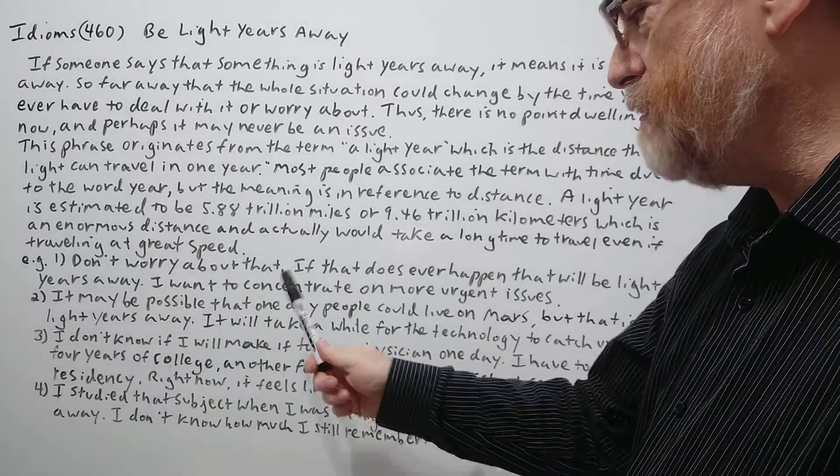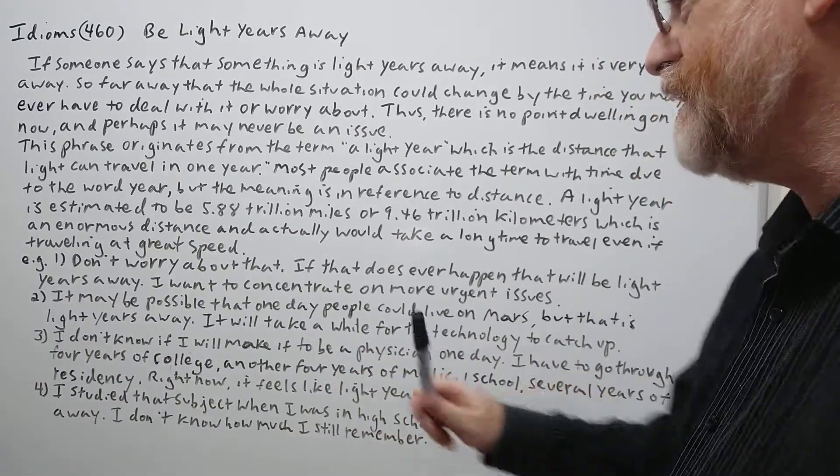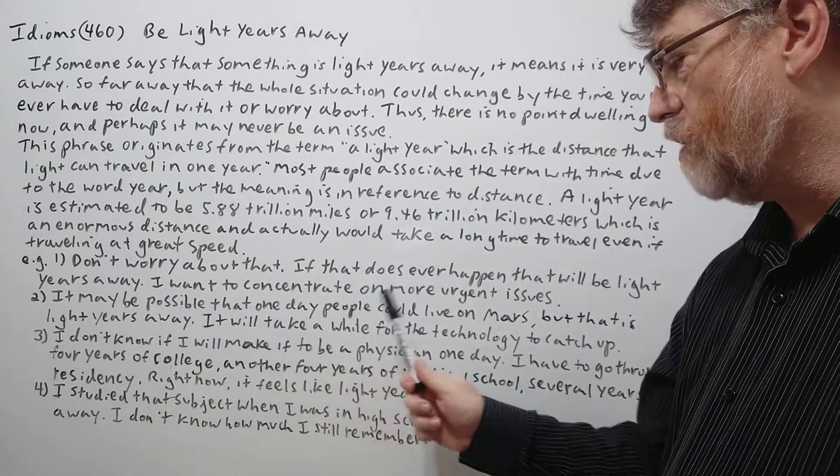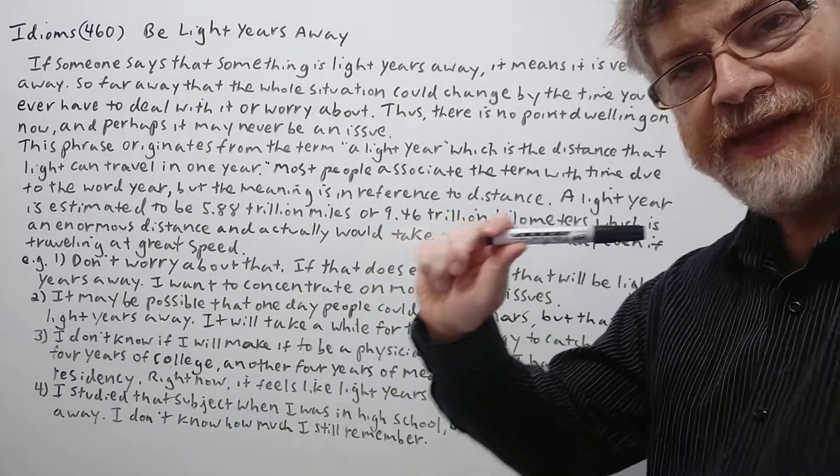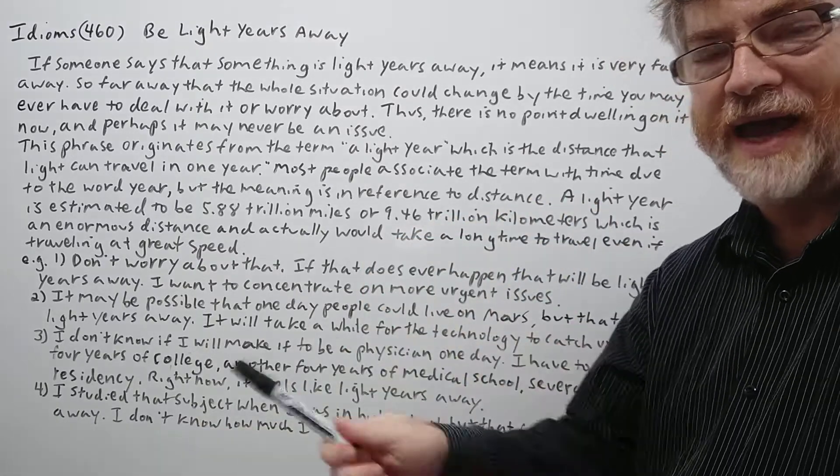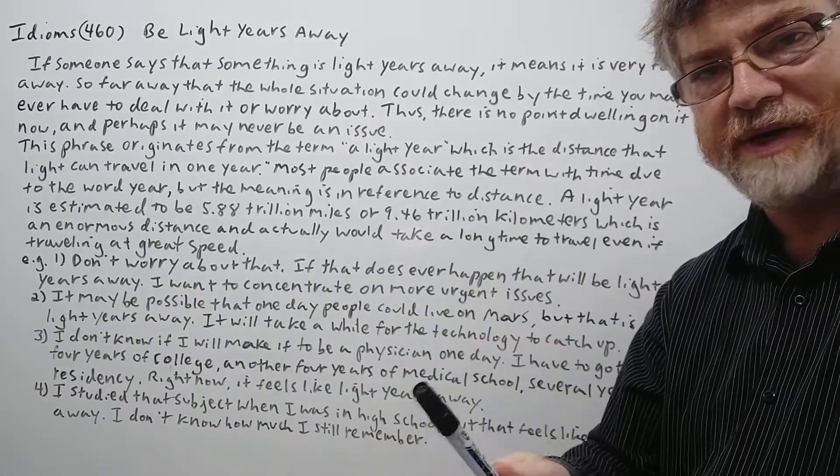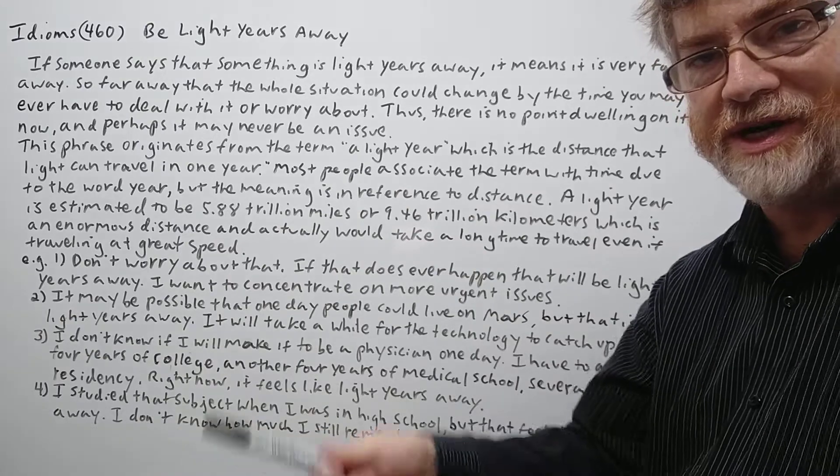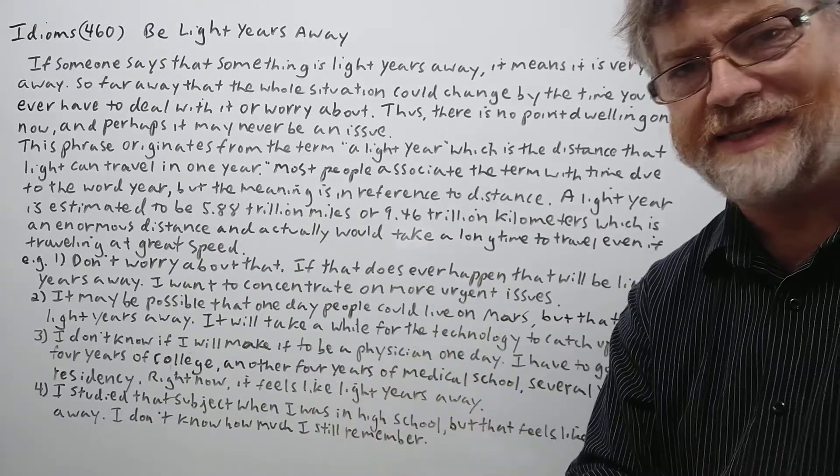Number two. It may be possible that one day people could live on Mars, but that is light years away. It will take a while for the technology to catch up so that we could actually travel conveniently or easily back and forth. Right now we could send a lander or a rover or something, but it takes a year and a half one way to Mars. So it's not really realistic for living on Mars, not at this time.